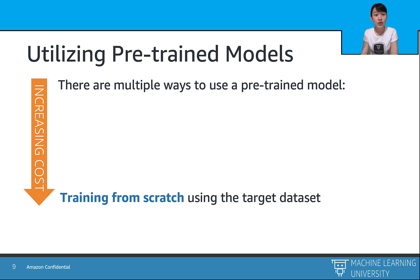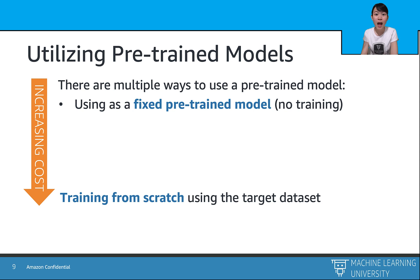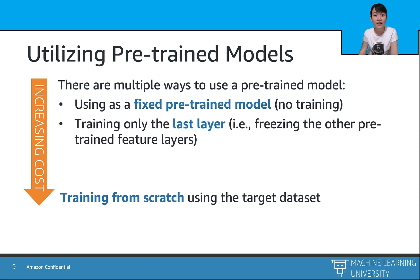Rather than training from scratch, what are the options to fully utilize pre-trained models? First, and the least computationally expensive option, is grab-and-go without any training. This method may be a little limited, especially when the target dataset contains labels that do not exist in the source dataset. Second, we can freeze the pre-trained weights and only train the last layer. This might be more computationally expensive than the first option, but may reach a better model.